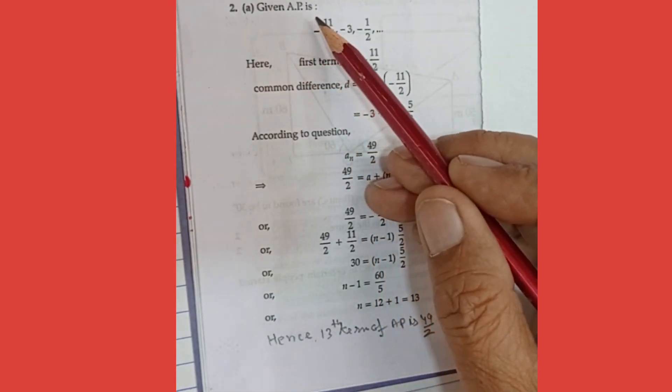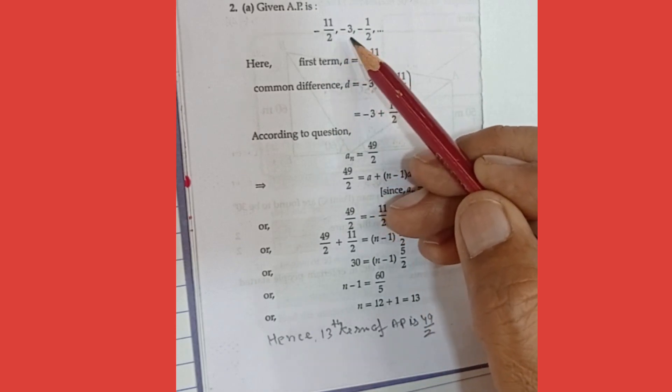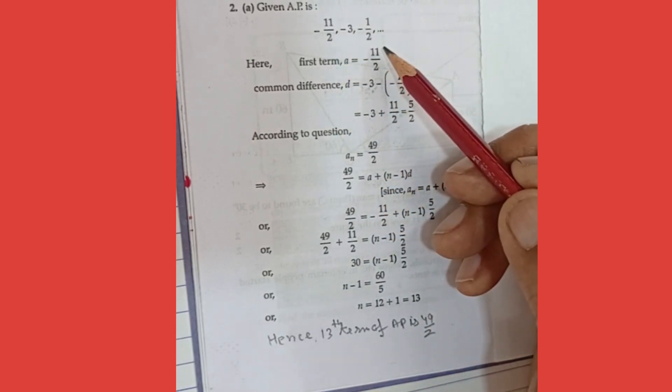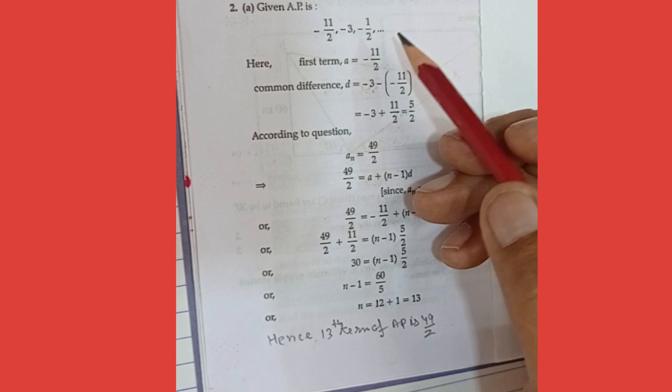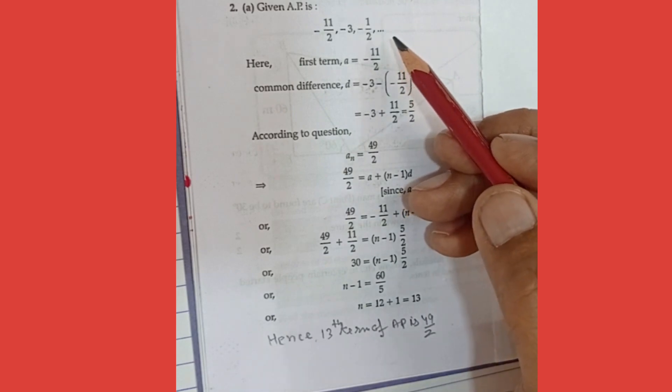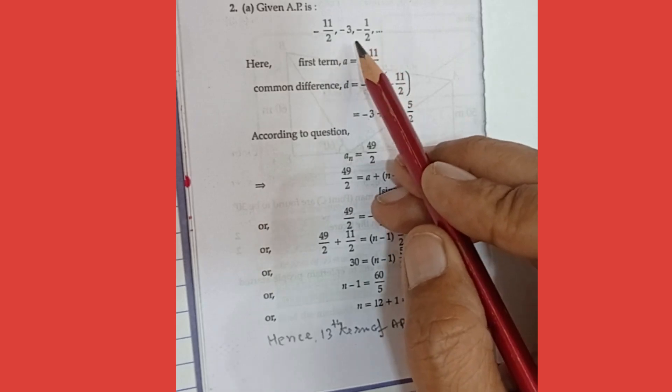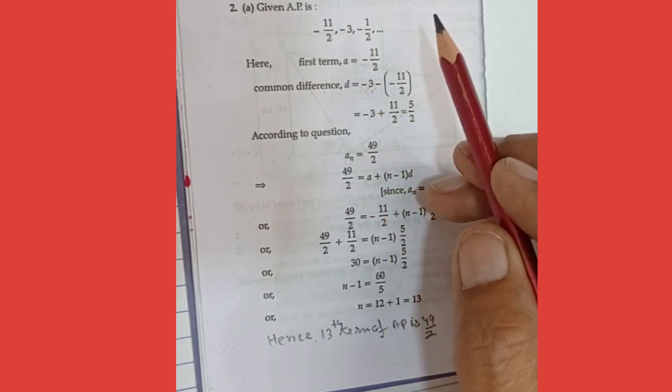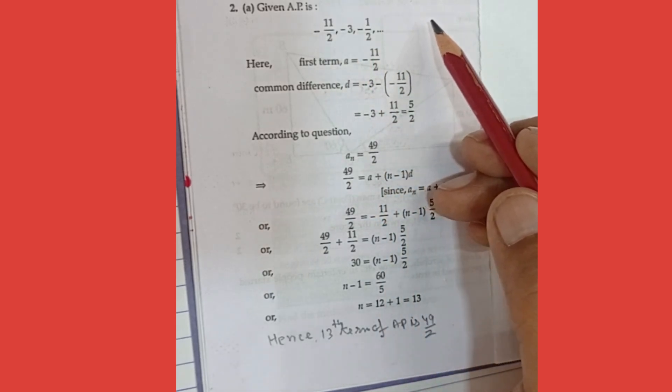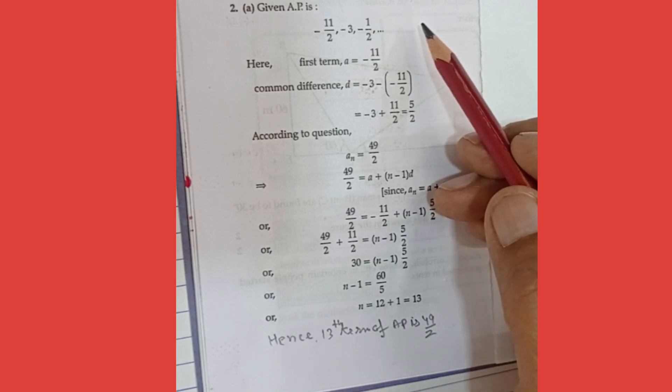So given AP is minus 11 upon 2, minus 3, and minus 1 upon 2. So how you recognize the AP? In AP, the difference between second and first and third and second is always equal. So for an AP we require two things: A and D. A means first term, D means common difference.